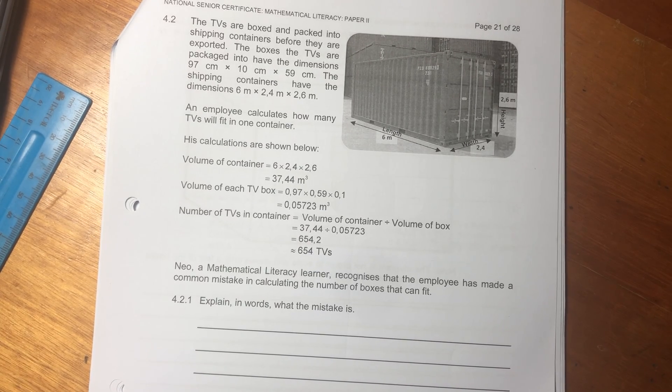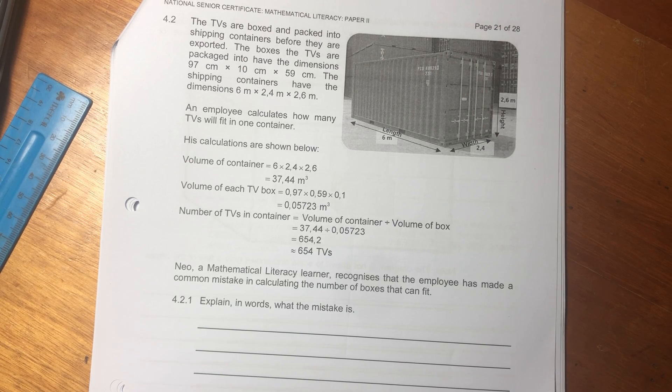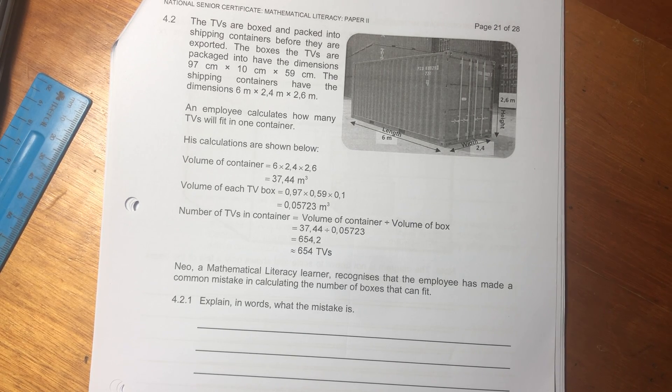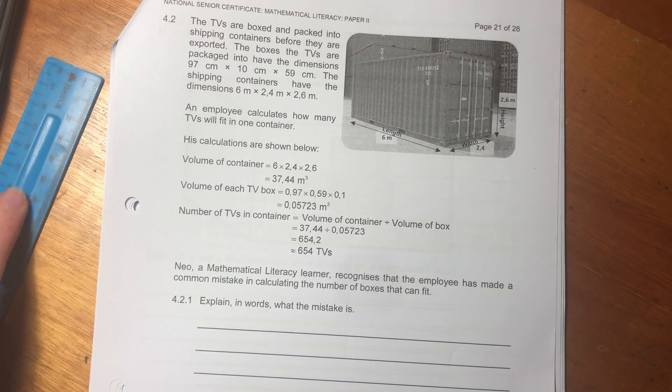Okay, 4.2. It says the TVs are boxed and packed into shipping containers before they are exported. The boxes the TVs are packaged into have the dimensions 97 cm by 10 cm by 59 cm. The shipping containers have the dimensions 6 m x 2.4 m x 2.6 m. An employee calculates how many TVs will fit in one container. His calculations are shown below.